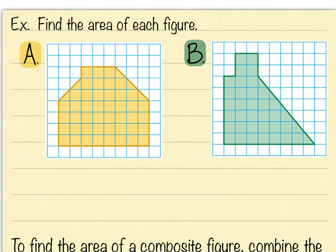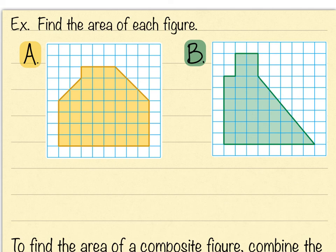Let's look at a few composite shapes on grid paper. These grids are one-by-one squares. In previous sections on perimeter, we counted travel distance around the shape, with diagonal distances being one and a half. But today we're looking at area — counting the squares inside. The little half-squares are counted as half squares, not one and a half, because we're talking about the space inside, not the distance.